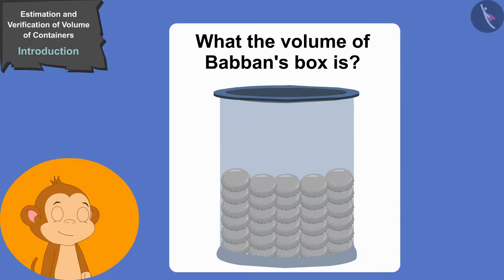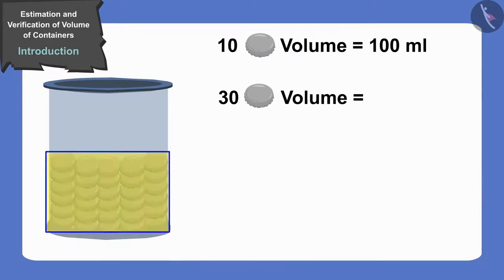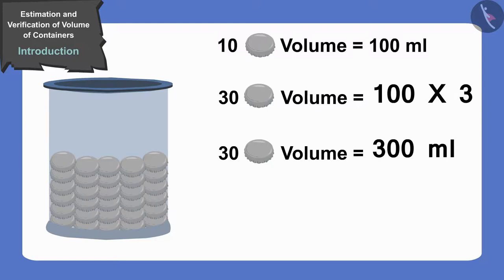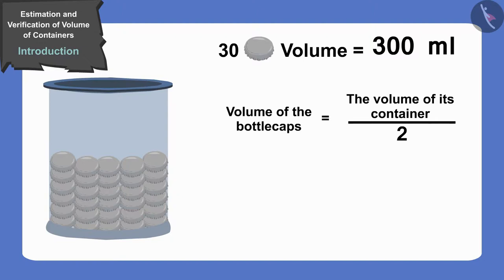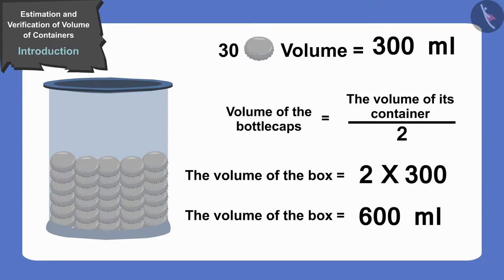If you wish, you can stop the video and think of the answer. The volume of 10 bottle caps is 100 milliliters, and Babban has collected 30 bottle caps. This will mean the volume of the bottle caps collected by Babban is 100 times 3, that is 300 milliliters. But the volume of the bottle caps collected by Babban is half the volume of its container. Therefore, the volume of the box of Babban will be 2 times 300, or 600 milliliters.